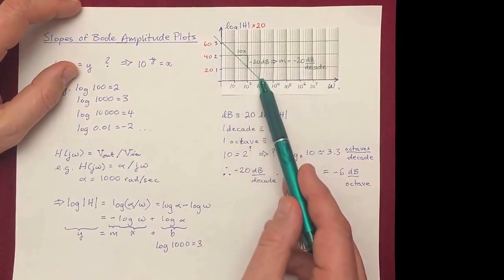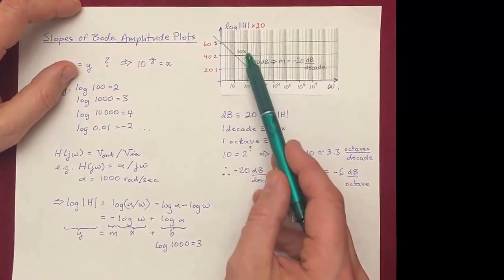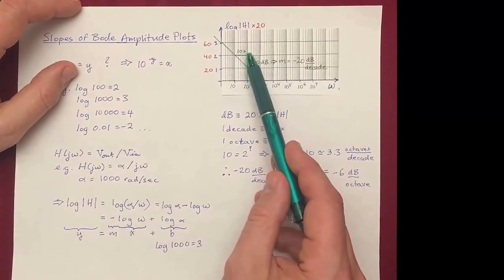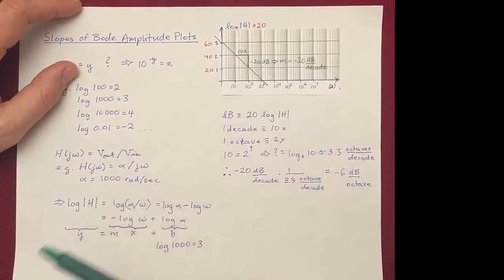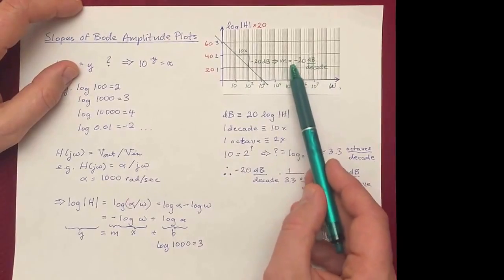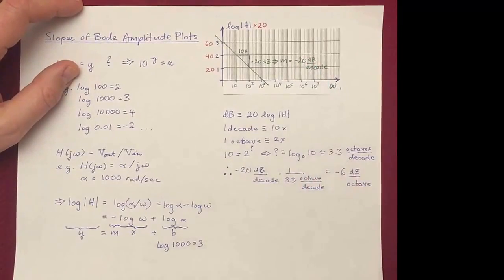We've got the same slope in here, but now the run is 10 times, and the rise is minus 20 dB, and so the slope is minus 20 dB per decade.